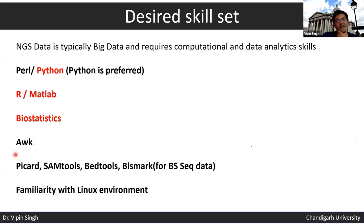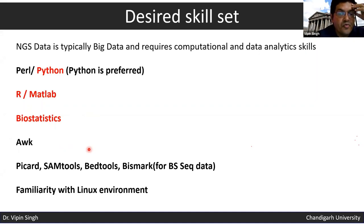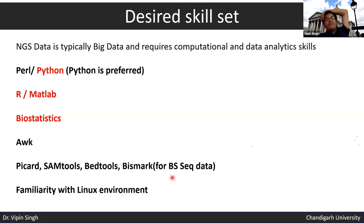R is very handy for analyzing data in columns and rows, and it is not very difficult to learn. There are also standard tools used specifically for NGS data analysis, such as Picard, SAMtools, BEDtools, and Bismark — Bismark is specifically for bisulfite sequencing data. You also need familiarity with the Linux environment to work comfortably and efficiently with large NGS datasets.